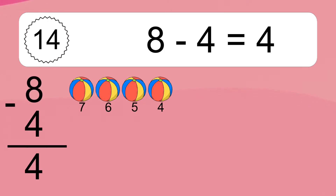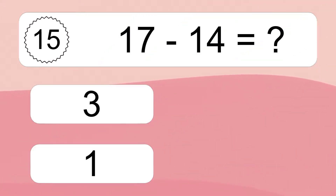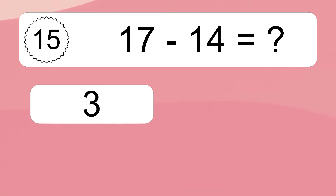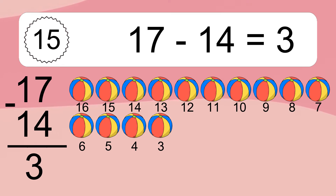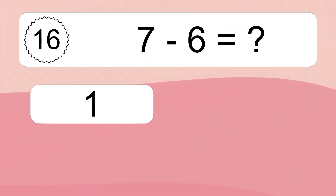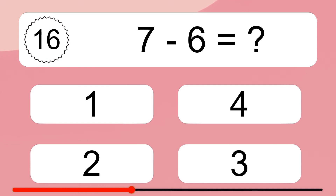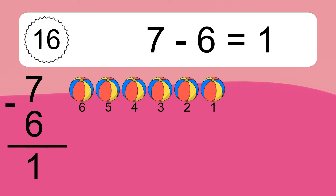8 minus 4 equals what? 8 minus 4 equals 4. Let's count it: 7, 6, 5, 4. 7 minus 6 equals what? 7 minus 6 equals 1. Let's count it: 6, 5, 4, 3, 2, 1.